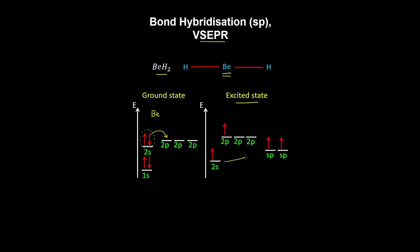So what we do is combine or hybridize an s and a p orbital to form two sp orbitals, which are at the same energy level.